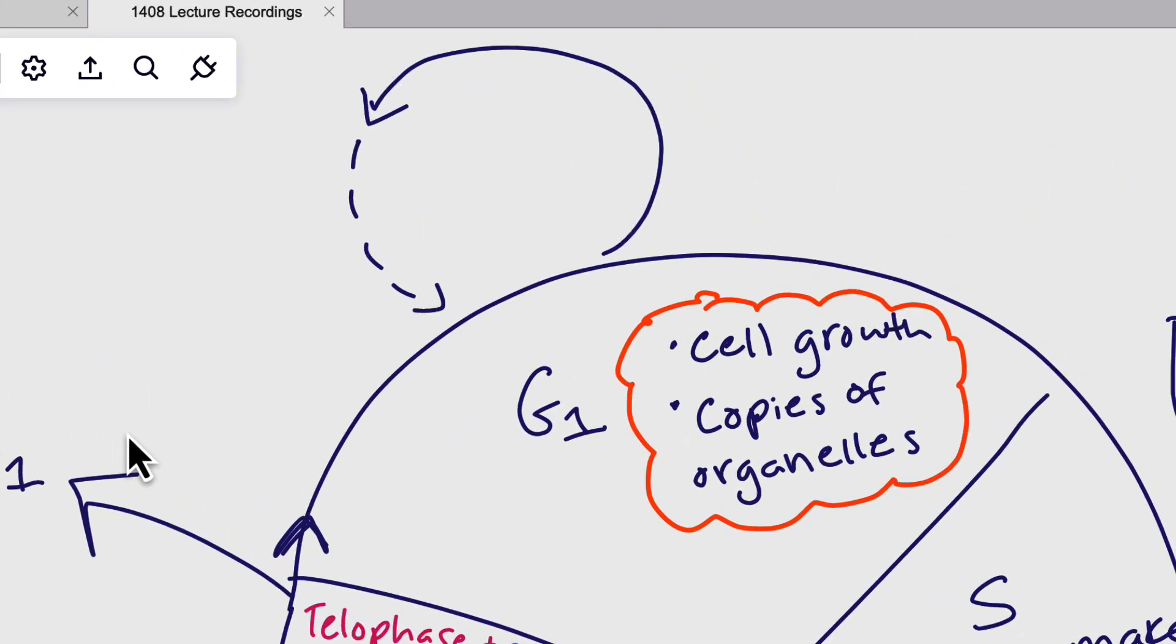The last part of this is this little side thing over here. So this is G0, as I alluded to before. Not O like the letter, it's the number. And G0 is where actually most body cells are in.